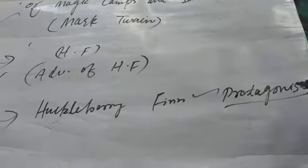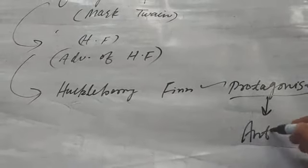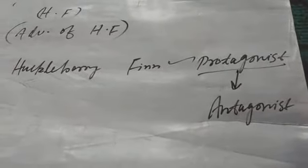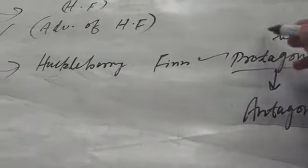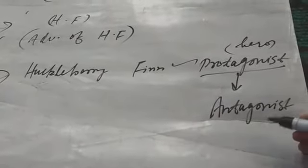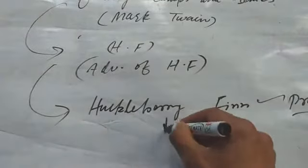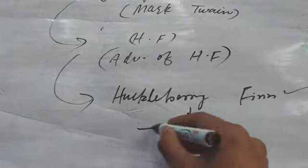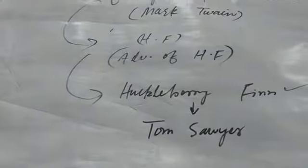Protagonist is the main character, the central character of the story, and the opposite of protagonist is antagonist. In other terms, we can see that protagonist is similar to hero and antagonist is similar to villain. So our central character, the protagonist of the story, is Huckleberry Finn, and the story is about Huckleberry Finn and his friend, Tom Sawyer.